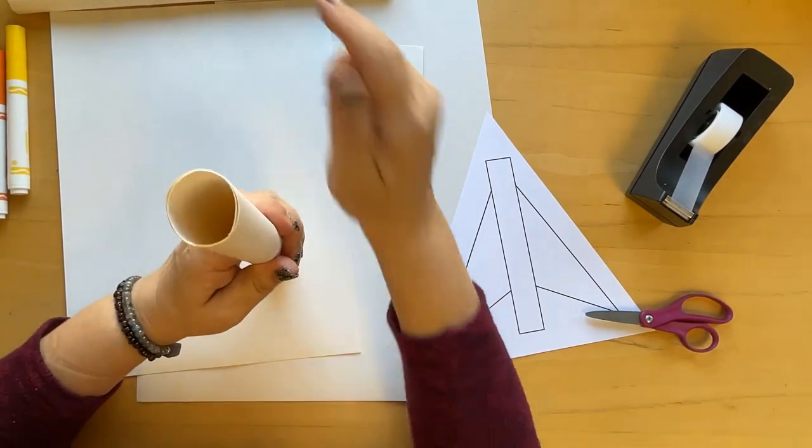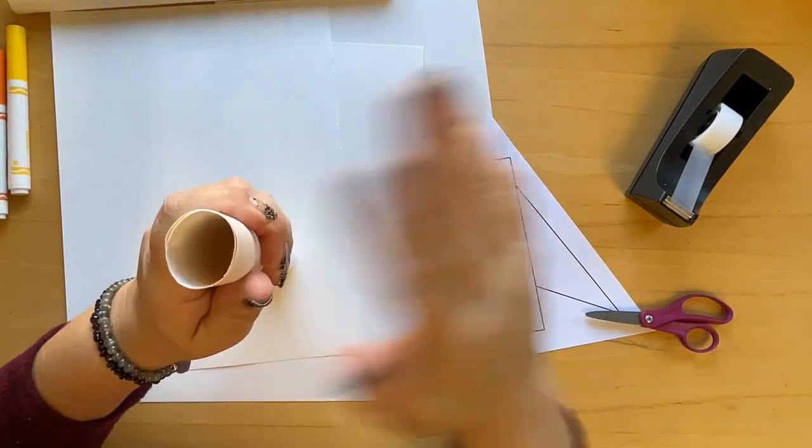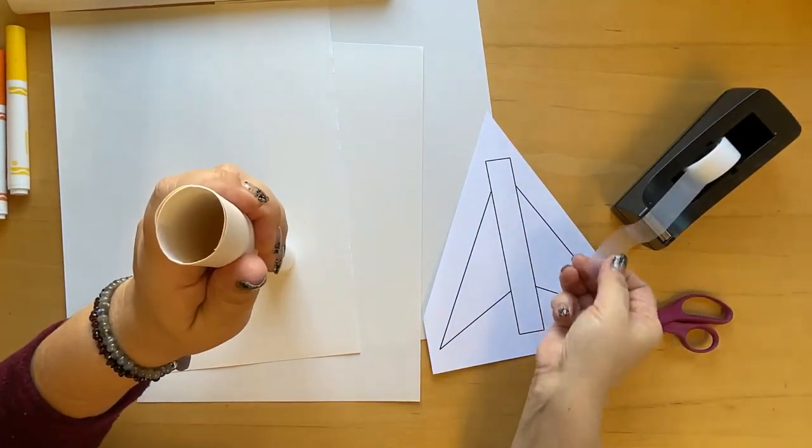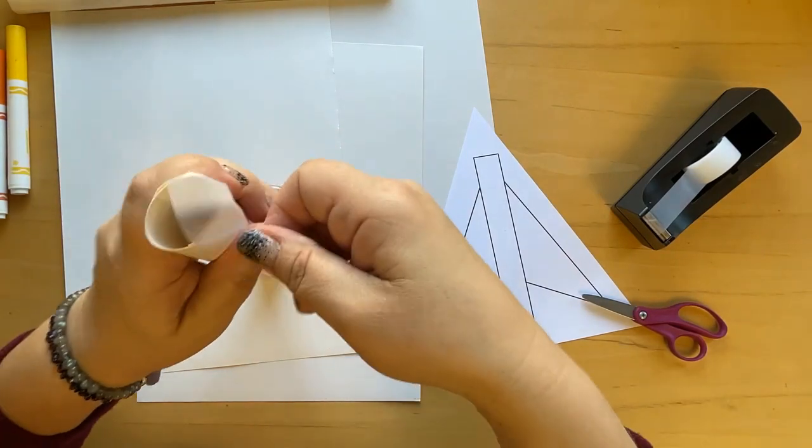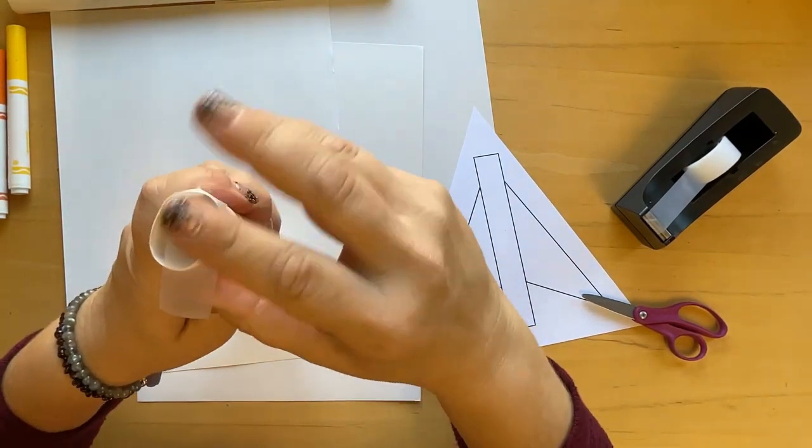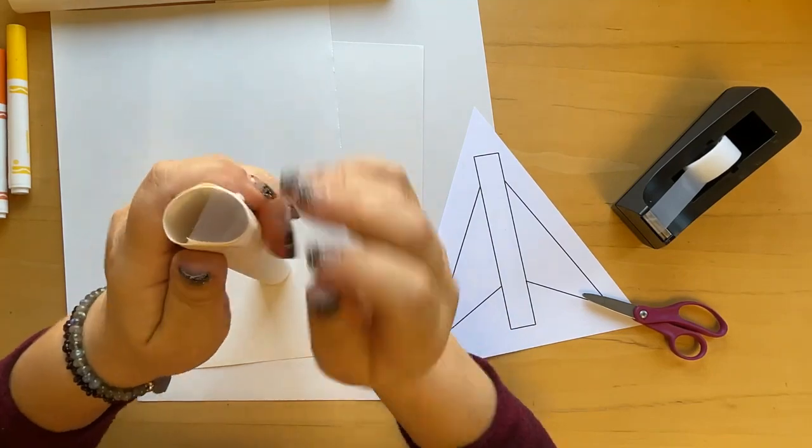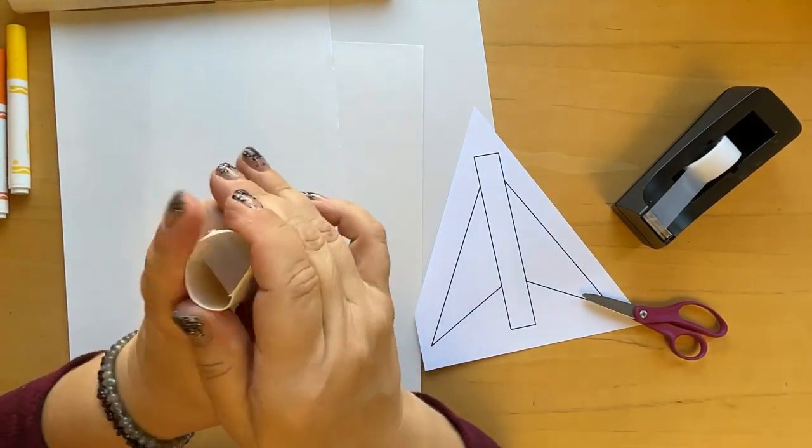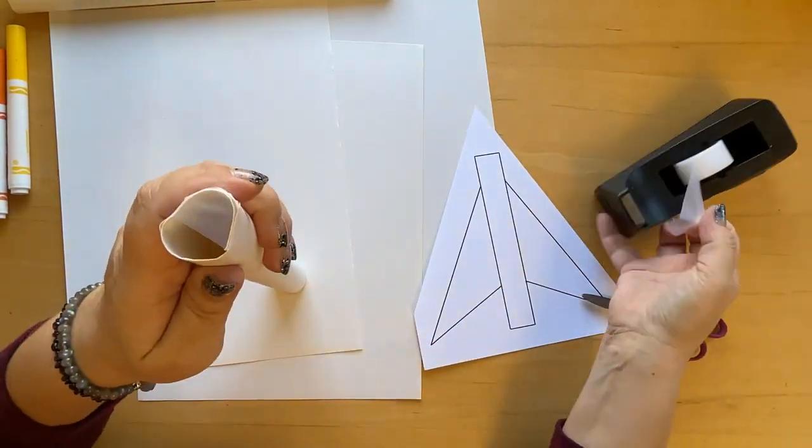Put tape over one end so that it is completely closed. This is going to be the nose end of your rocket.